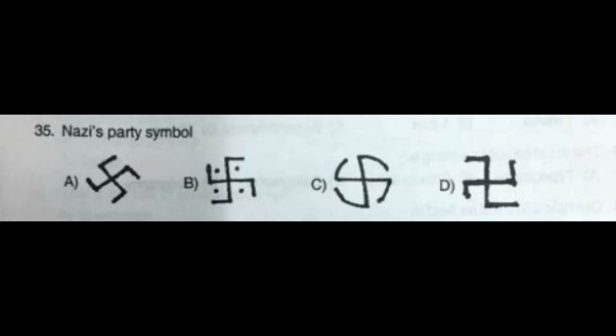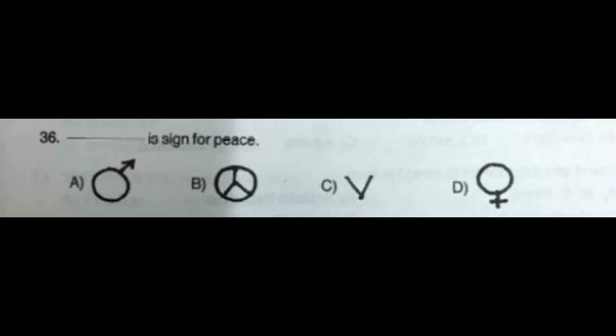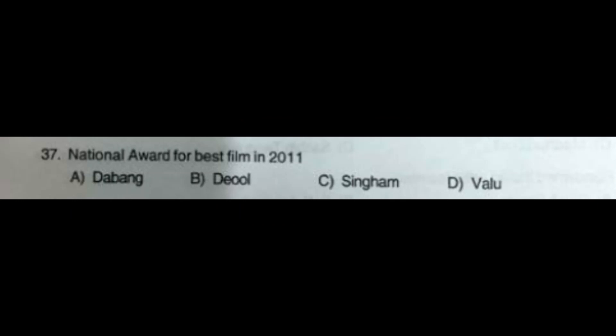Question number 35: Nazi Party symbol — the options are visual symbols shown on screen; the correct answer is option A. Question number 36: Dash is the sign for peace — no correct answer was provided for this question, so we move to the next.